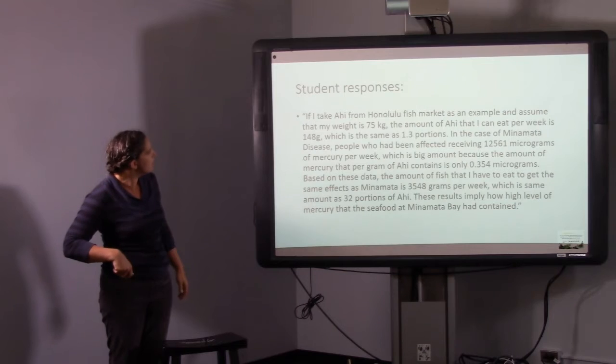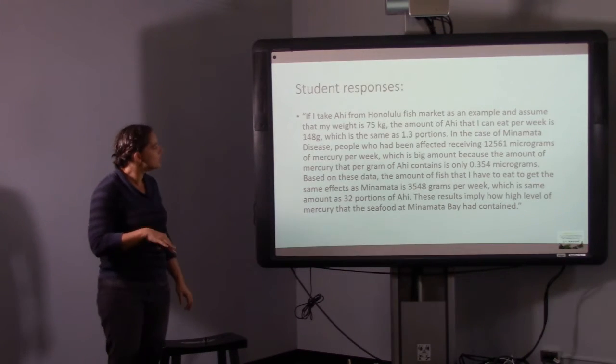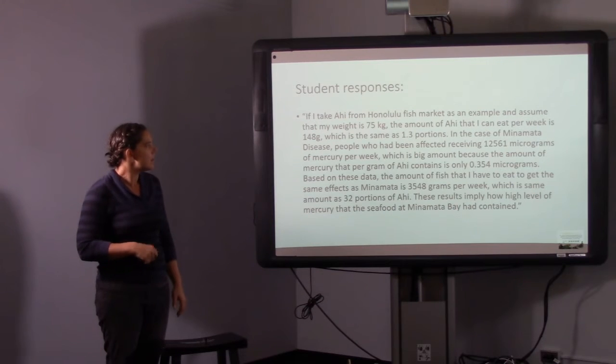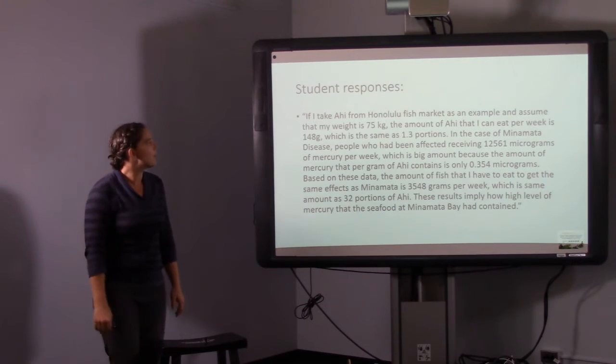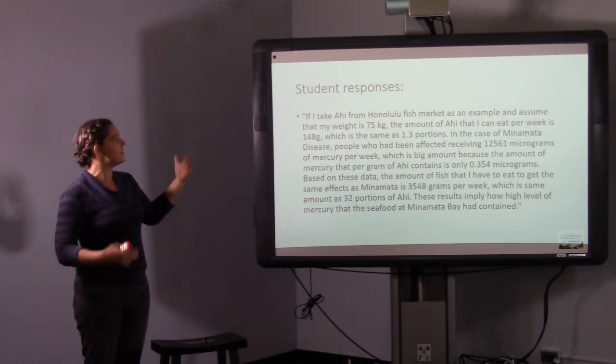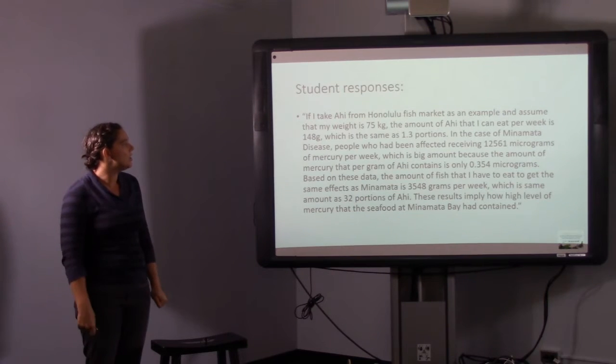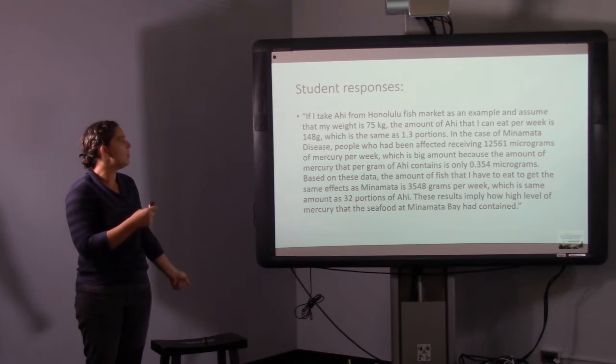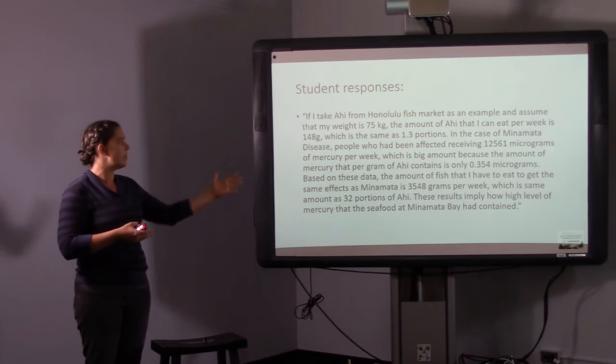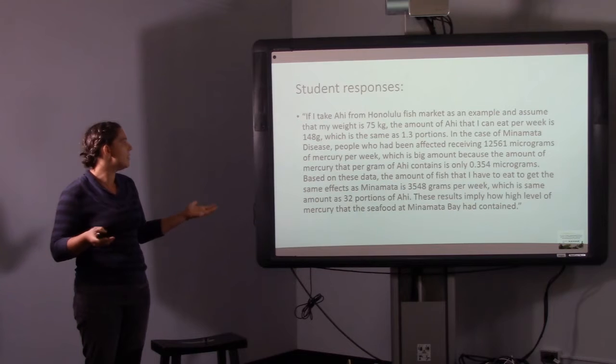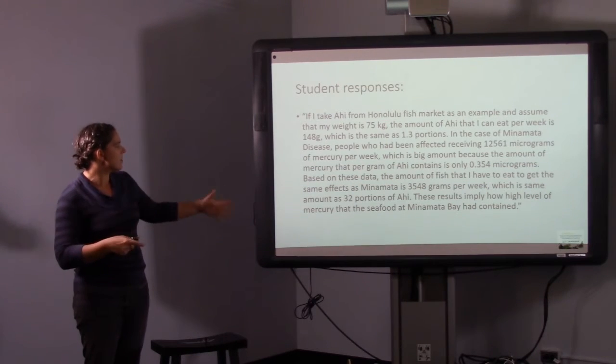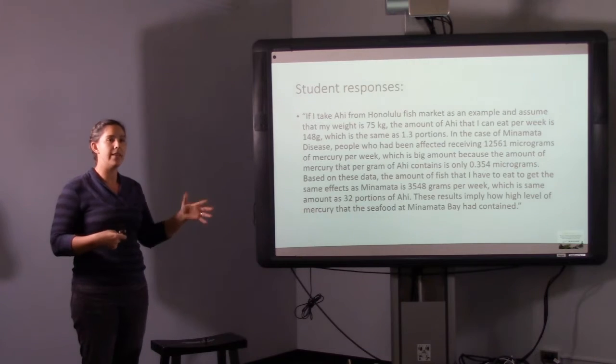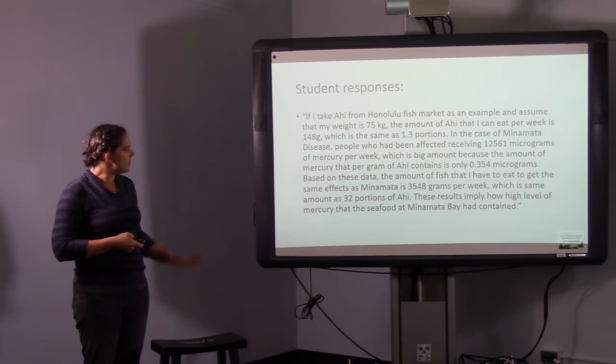This was a student who's from Japan, a visiting student. So she really picked up on the Minamata disease and talked about that a lot. Her language is not super great, but her reasoning is really, really nice. She discusses that if her, this was the important part, of her weight, this is how much ahi she can eat and how much does translate to how many portions. And then she says in the case of Minamata disease, people were receiving about 12,000 micrograms. And then she compares it to how much is in a pound or a gram of ahi and then converted that to how many portions of ahi she would need to eat to get into this type of level of having mercury poisoning. So I really liked, she did a really good job with this piece.